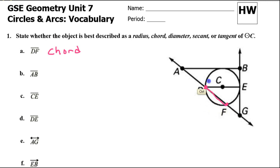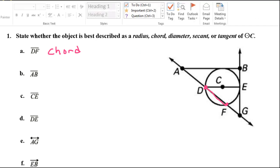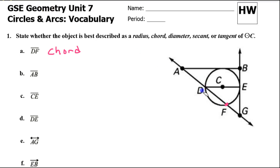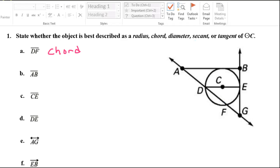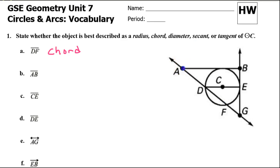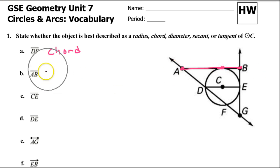If it passed through the center, it would be called a diameter. What about segment AB? We see segment AB right here. Notice segment AB just skims across the circle, only touching one point. That is a tangent.